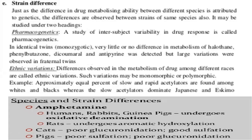In identical twins, very little or no difference in metabolism is observed for drugs like halothane, phenylbutazone, antipyrine, etc., whereas differences are seen in fraternal twins. The second heading is ethnic variation — differences observed in the metabolism of drugs among different races.